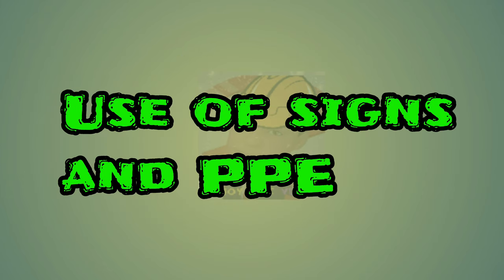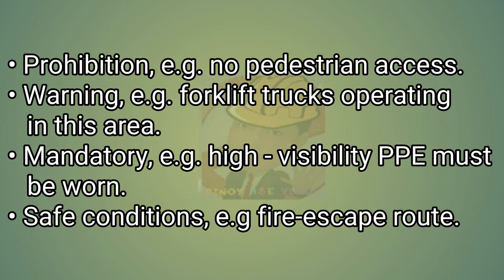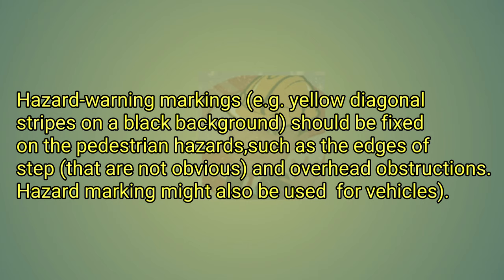Use of signs and PPE: clearly visible and easily understood signs and markings should be provided so that pedestrians, even those unfamiliar with the workplace, are made aware of hazards and what they must do to avoid them. Signs should conform to relevant standards: prohibition signs, e.g. no pedestrian access; warning signs, e.g. forklift trucks operating in this area; mandatory signs, e.g. high visibility PPE must be worn; safe condition signs, e.g. fire escape route. Hazard warning markings, for example yellow diagonal stripes on a black background, should be fixed on pedestrian hazards such as the edges of steps that are not obvious, and overhead obstructions.